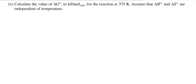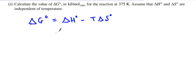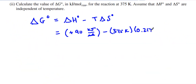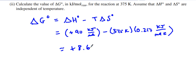Now they want to know the ΔG. ΔG for the reaction equals ΔH minus TΔS. The ΔH given at the beginning was positive 90 kJ/mol. The temperature is 375 K. The ΔS was 217, but watch the units — it's J/mol·K, so we need to convert to 0.217 kJ/mol·K. You could also convert the 90 kJ/mol into joules; you just need to be on the same playing field. We get positive 8.625 kJ/mol.